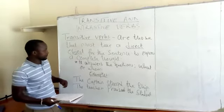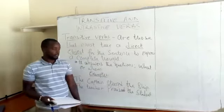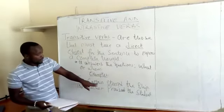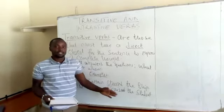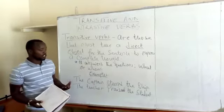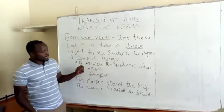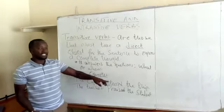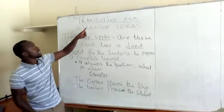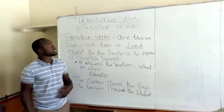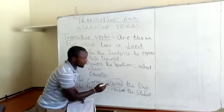For example, you will say that the captain steered the ship. If this verb 'steered' was not to be followed by anything, then our sentence will not make any sense at all. Therefore, for us to get sense from this sentence, we must add the words 'the ship,' and that makes it a transitive verb. Therefore, 'steered' is a transitive verb.